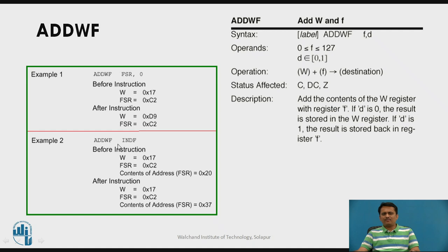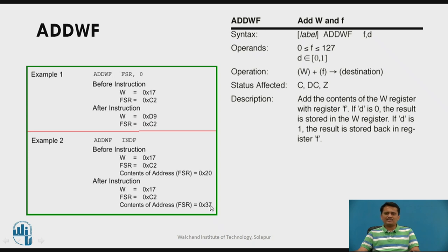Consider another example: ADDWF INDF. Using INDF means indirect addressing mode. If working register contents are 70, FSR contents are C2, and the contents at the address pointed by FSR are 20, then the working register is added with the memory location pointed by FSR. The result 70 plus 20 equals 90, stored in the memory location pointed by FSR, changing the contents at address C2.